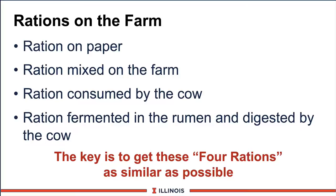The third ration is that ration consumed by the cow. The cow can now sort and select various parts of the components of the various feed ingredients, depending on particle size, palatability, and other factors. So she may not actually consume what we have in the bunk.